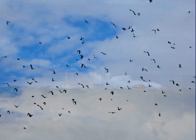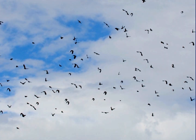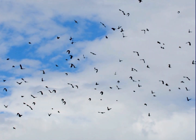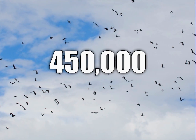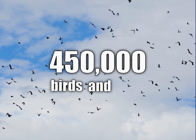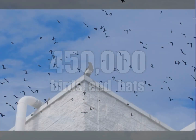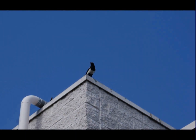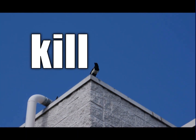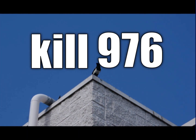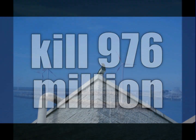Turbines can be detrimental to bird and bat populations. Scientists estimate that each year approximately 450,000 birds and bats are killed by turbines. This number might seem like a tragedy; however, building strikes kill around 976 million birds and bats each year.